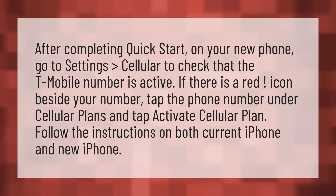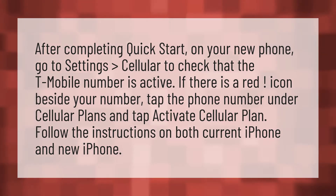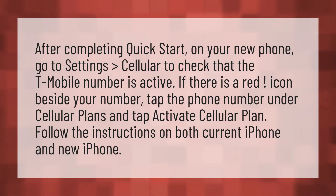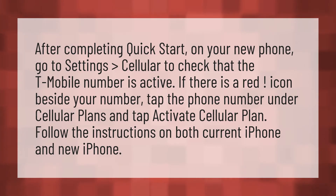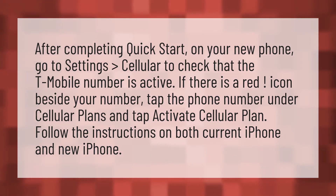After completing Quick Start on your new phone, go to Settings, then Cellular, to check that the T-Mobile number is active. If there is a red icon beside your number, tap the phone number under Cellular Plans and tap Activate Cellular Plan. Follow the instructions on both your current iPhone and new iPhone.